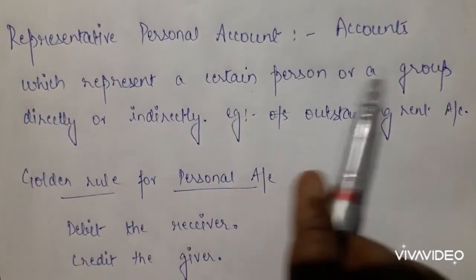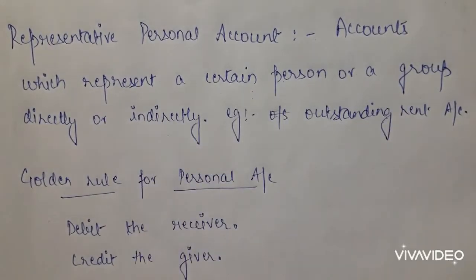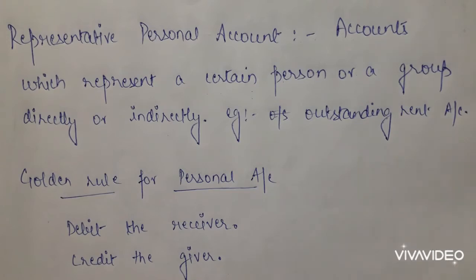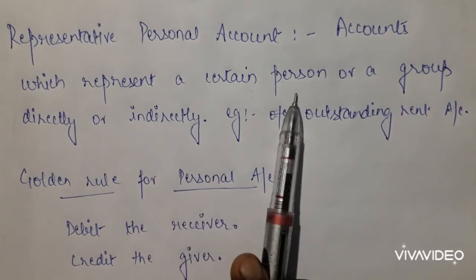The third type is the representative personal account. These accounts represent a certain person or group directly or indirectly. The person is not directly included, but the account represents them. For example, outstanding rent — rent we have to pay to someone, and if it is outstanding (due), it is related to some person. So the outstanding rent account is treated as a representative personal account.